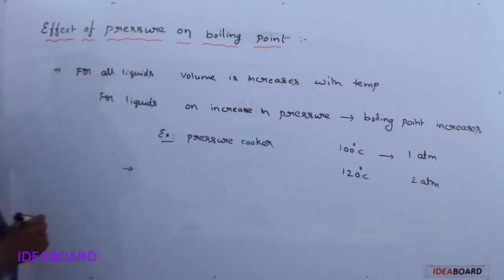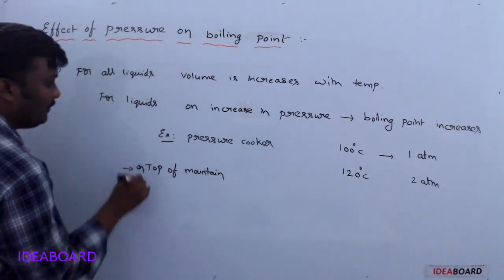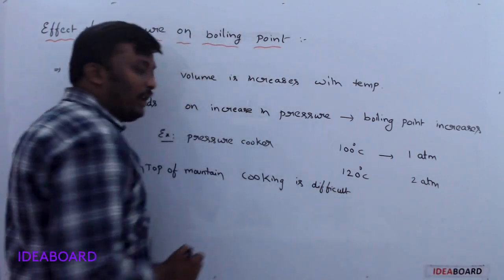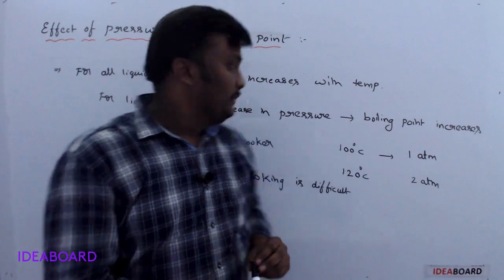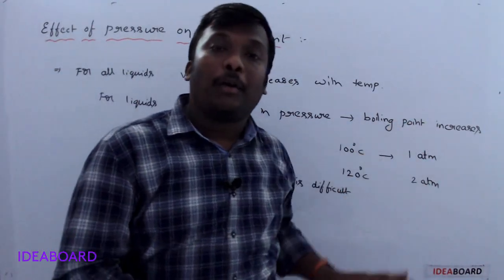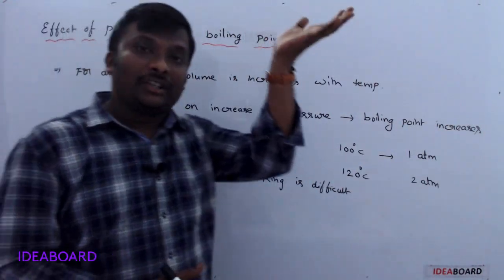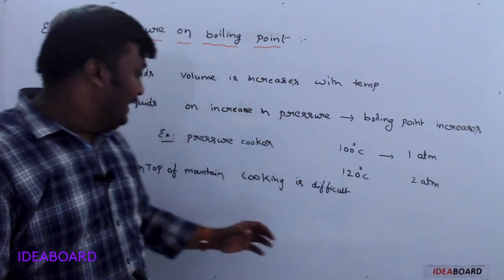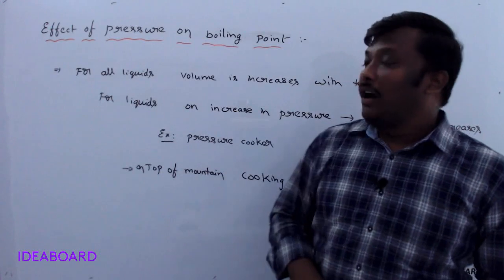Another example: cooking is very difficult on top of mountains. On top of mountains, at higher altitude, pressure decreases. Whenever pressure decreases, boiling point also decreases. Increase in pressure → boiling point increases; decrease in pressure → boiling point decreases. So at higher altitude, pressure decreases and boiling point decreases, which is why it is very difficult to cook food at the top of mountains compared to sea level. This concludes the effect of pressure on boiling point.